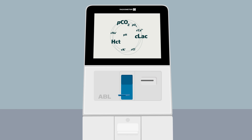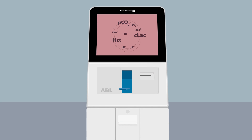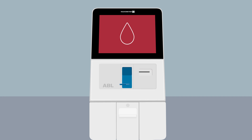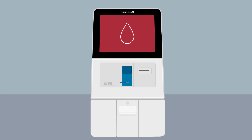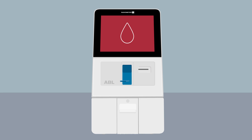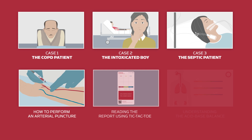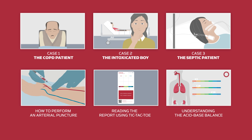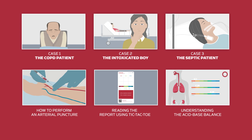The blood gas analysis, together with the method of exclusion, helped to provide goal-directed therapy quickly, as well as to monitor and confirm the effect of the initiated treatment. Watch the other case videos to see how the ABL blood gas analyzer can aid in the diagnosis of diseases.